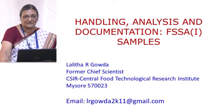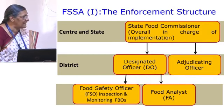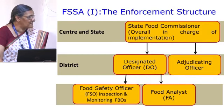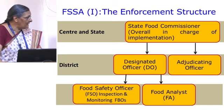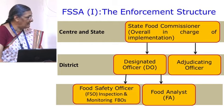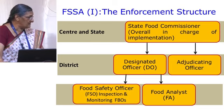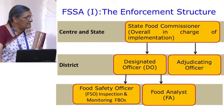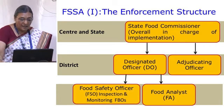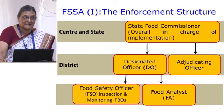In charge of implementing the Food Safety and Standards Act of India, at the district level you have the designated officer and the adjudicating officer. The adjudicating officer decides the penalty and what should be done. In the third tier, we have the Food Safety Officer who does the inspection of food businesses and food business operators, and also the food analyst. Your results will dictate whether the person has to pay a penalty or go to prison.